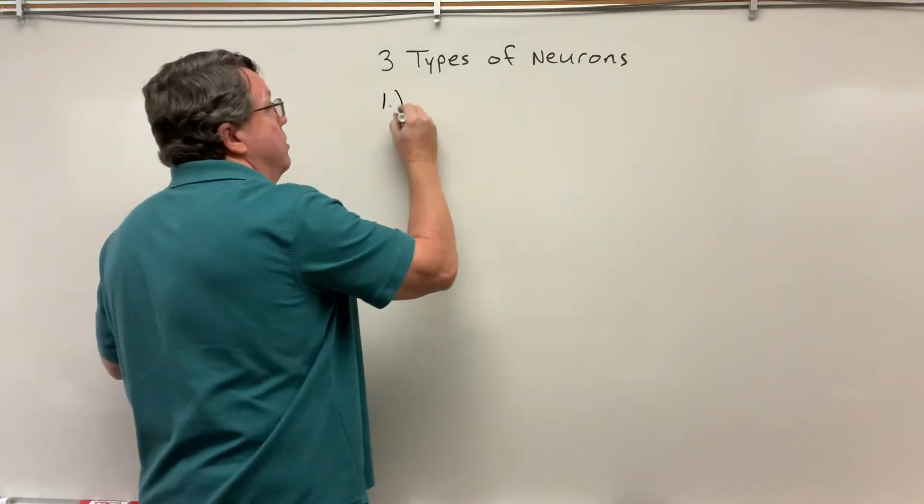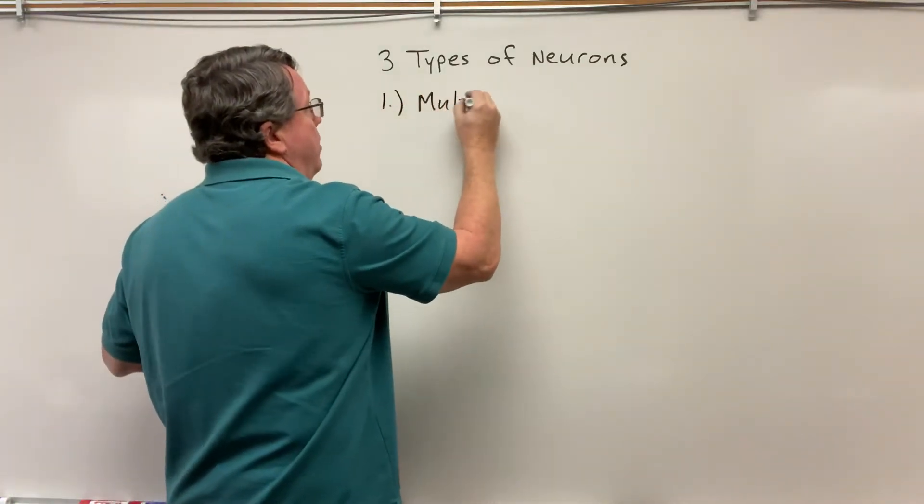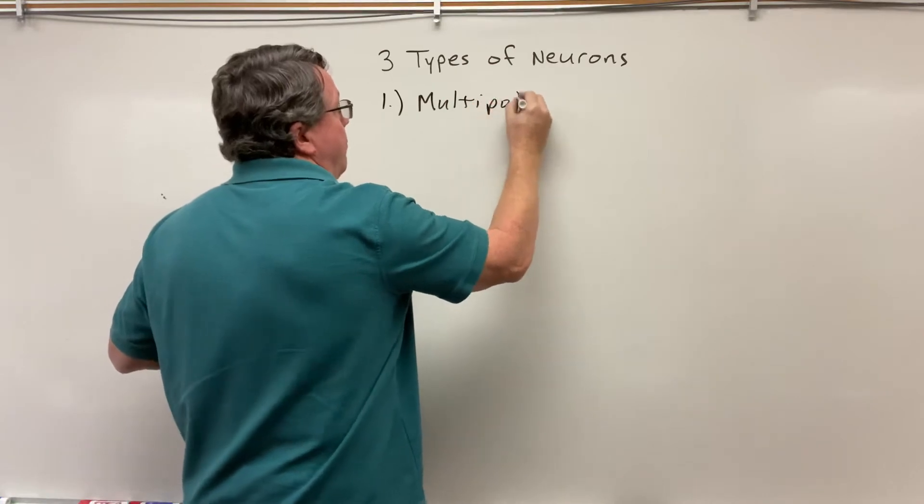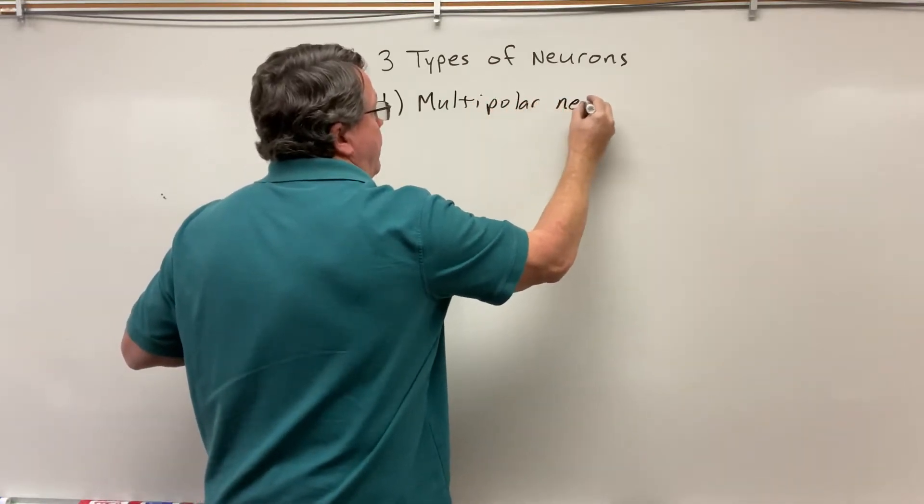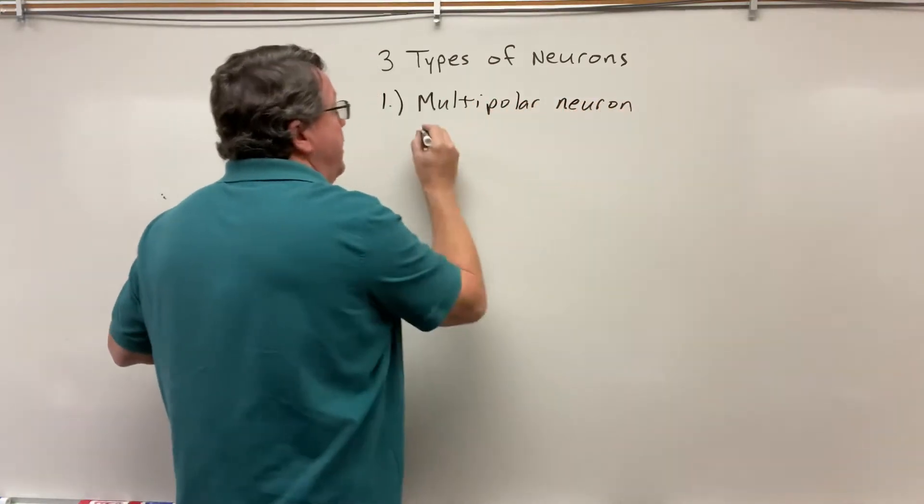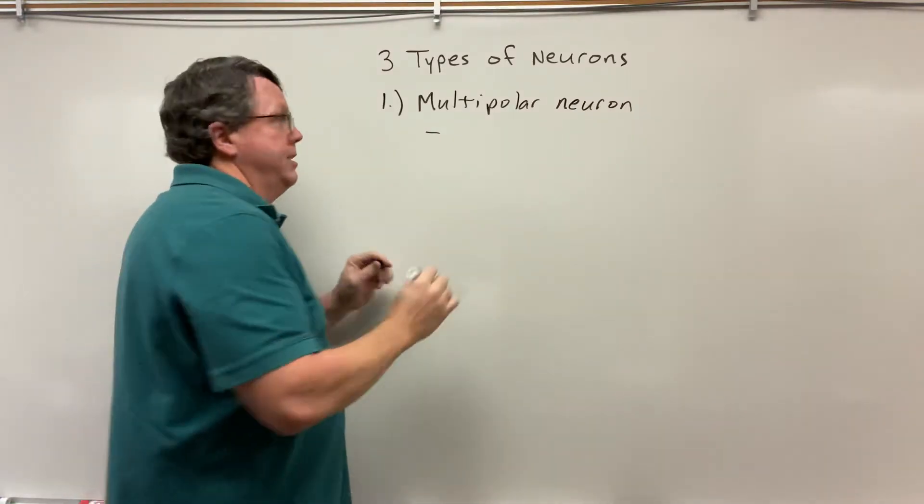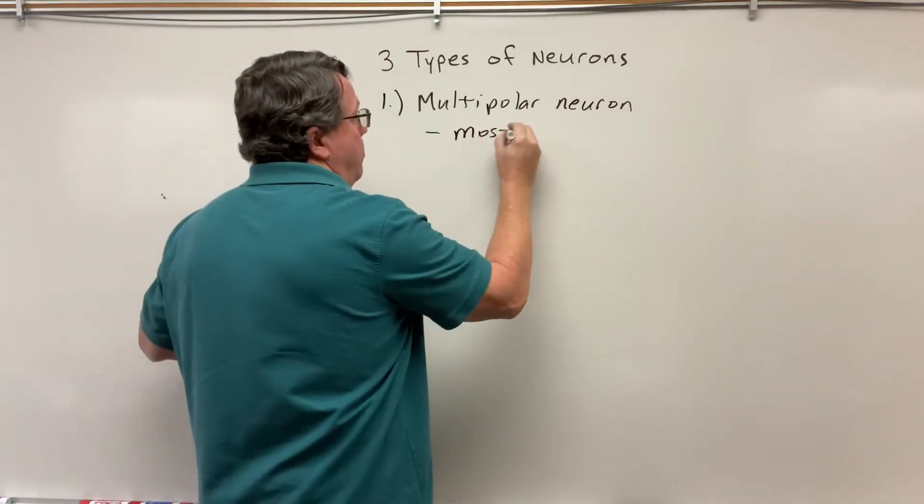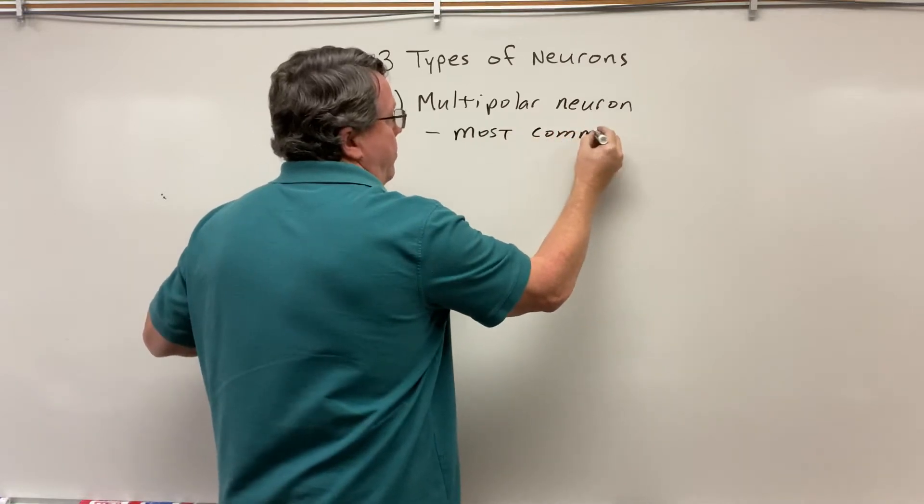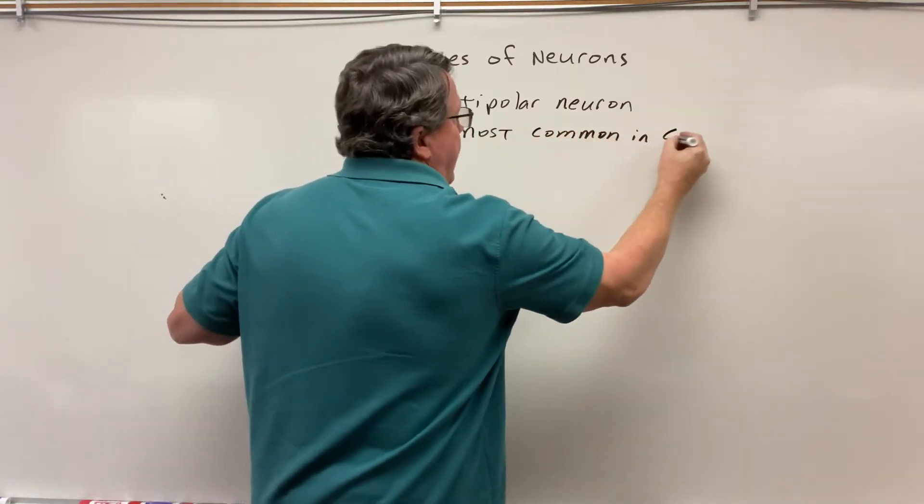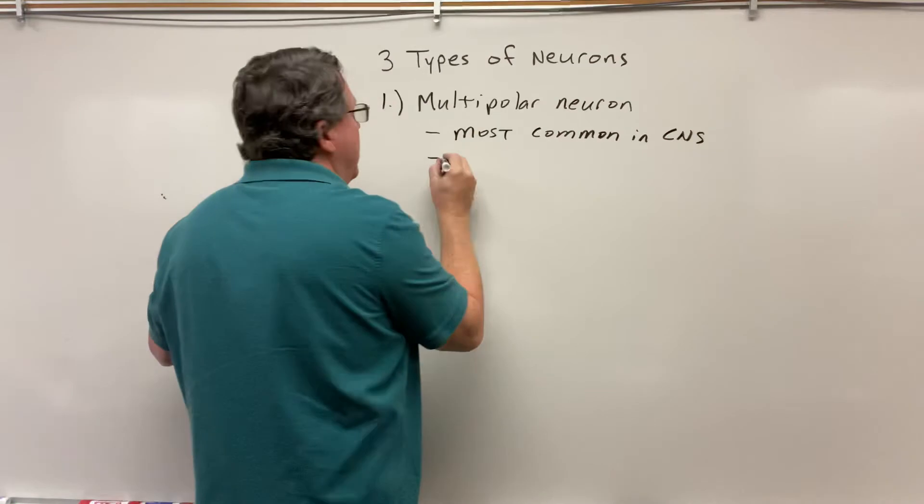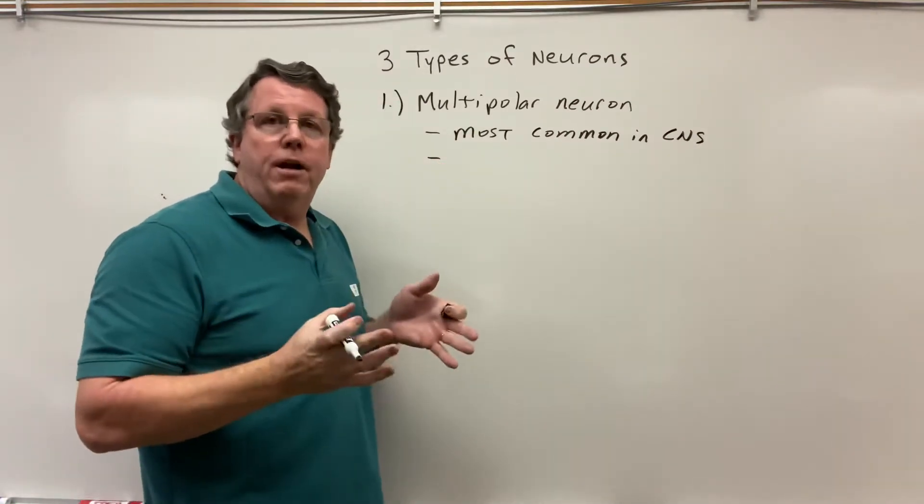The first type is called a multipolar neuron. This is the most common type of neuron in the central nervous system, and is also found in skeletal muscle.